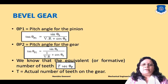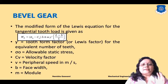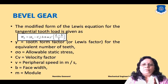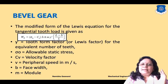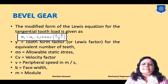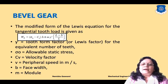Next is the modified Lewis equation. In bevel gear, one important factor is the bevel factor, given by (L − b)/L. The modified Lewis equation for tangential load Wt is: Wt = σo × Cv × b × π × m × y' × (L − b)/L, where σo is allowable static stress, Cv is velocity factor, b is face width, m is module, y' is the modified tooth form factor, and (L − b)/L is the bevel factor.